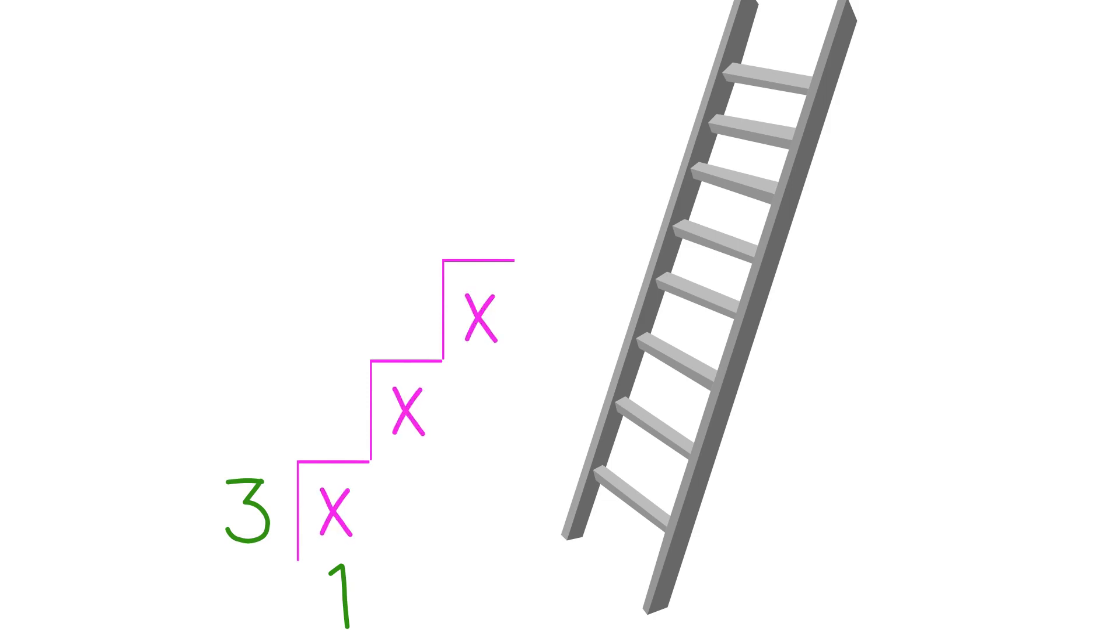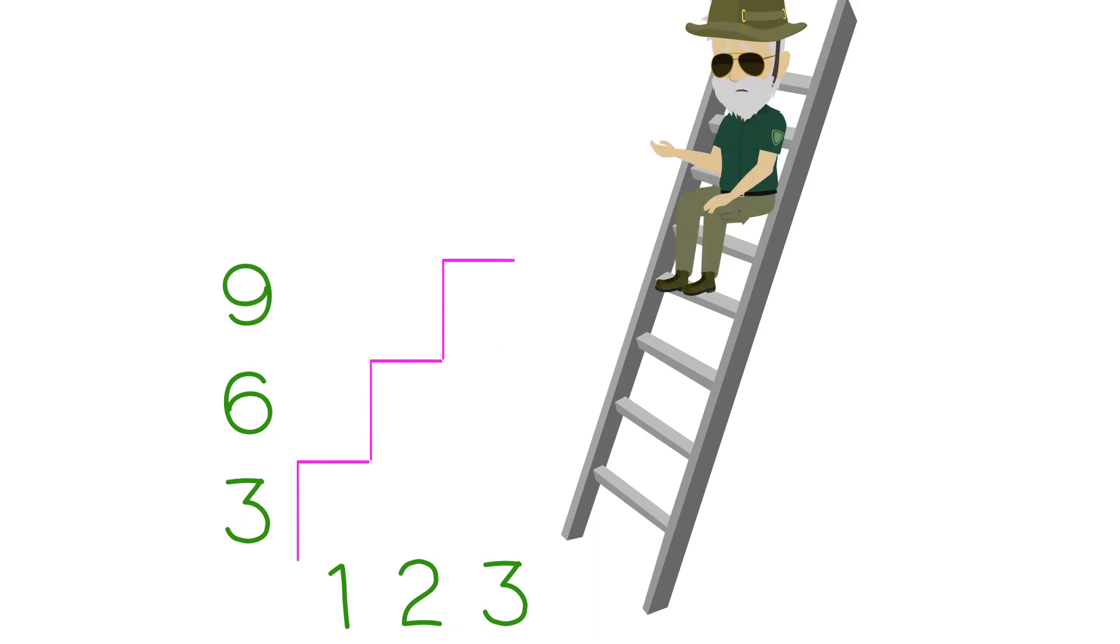That ratio stays the same. That means if I go over two feet, then I have to go up six feet. And if I go over three feet, then I have to go up nine feet. Proportional numbers always increase or decrease by the same ratio.